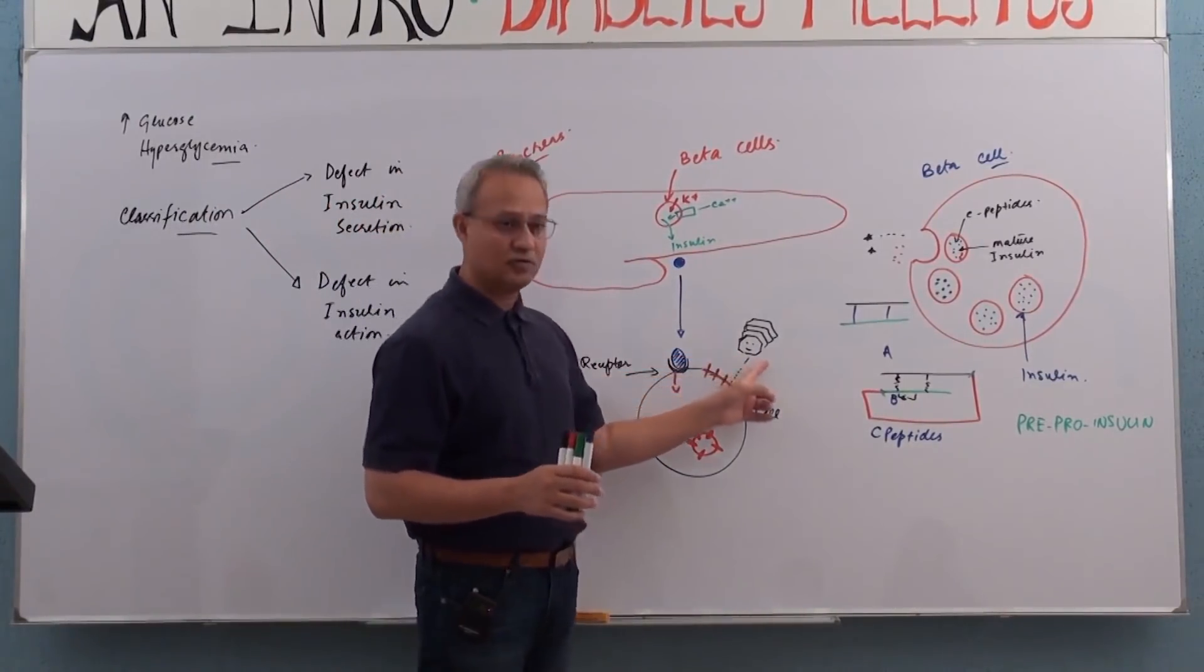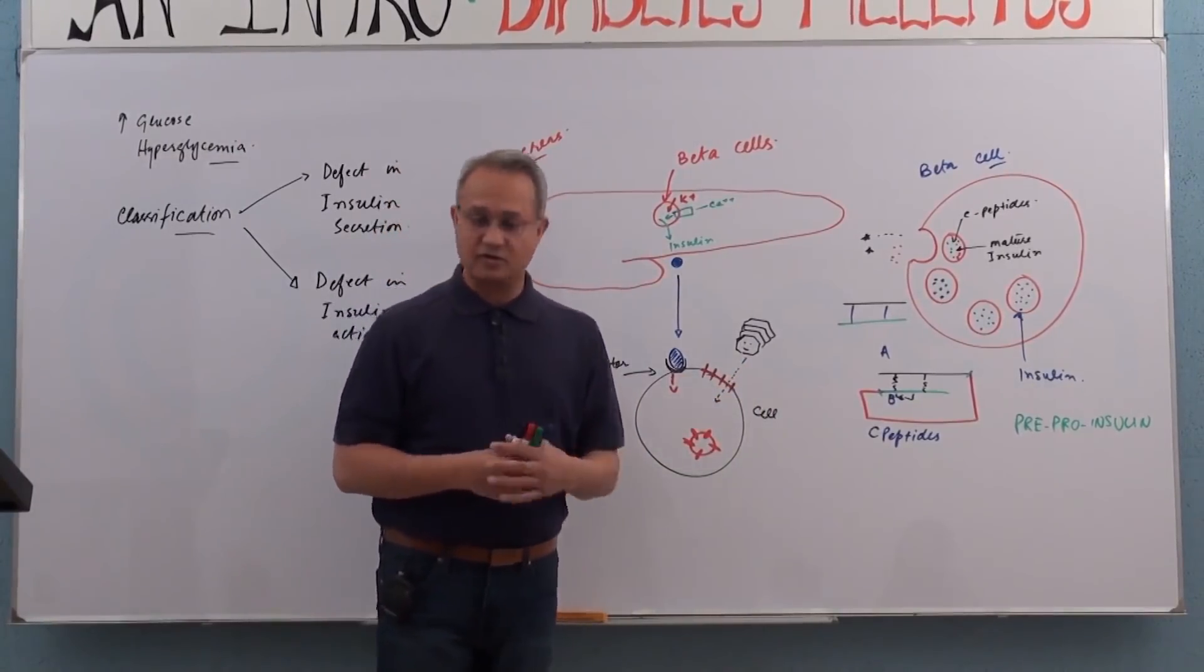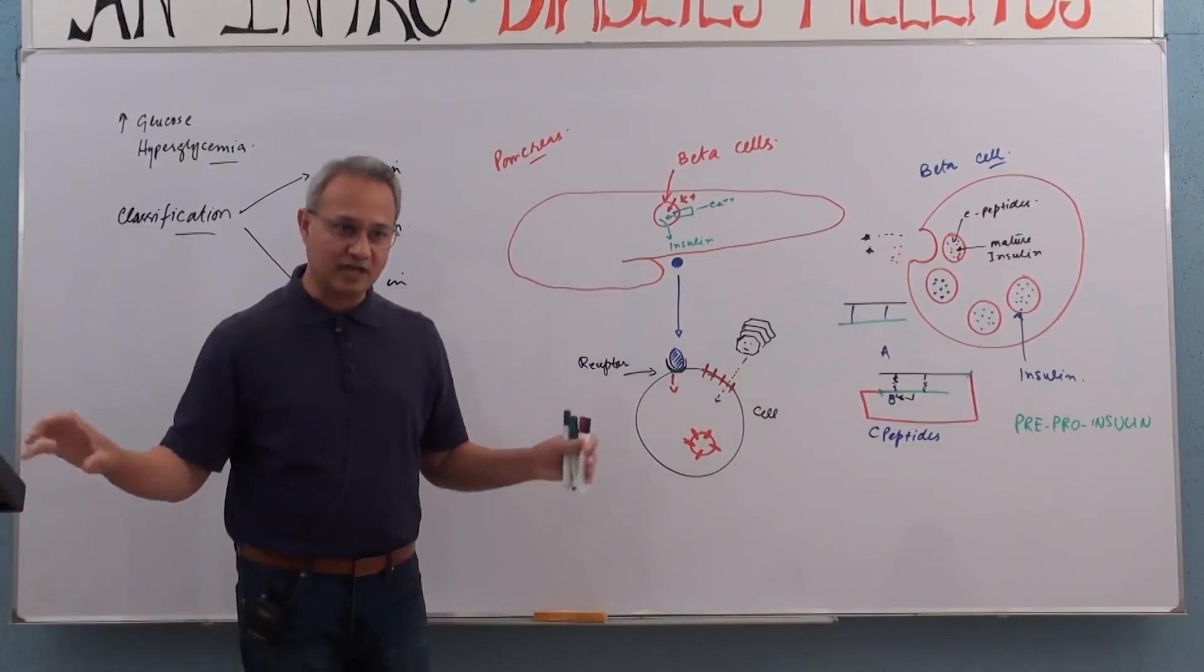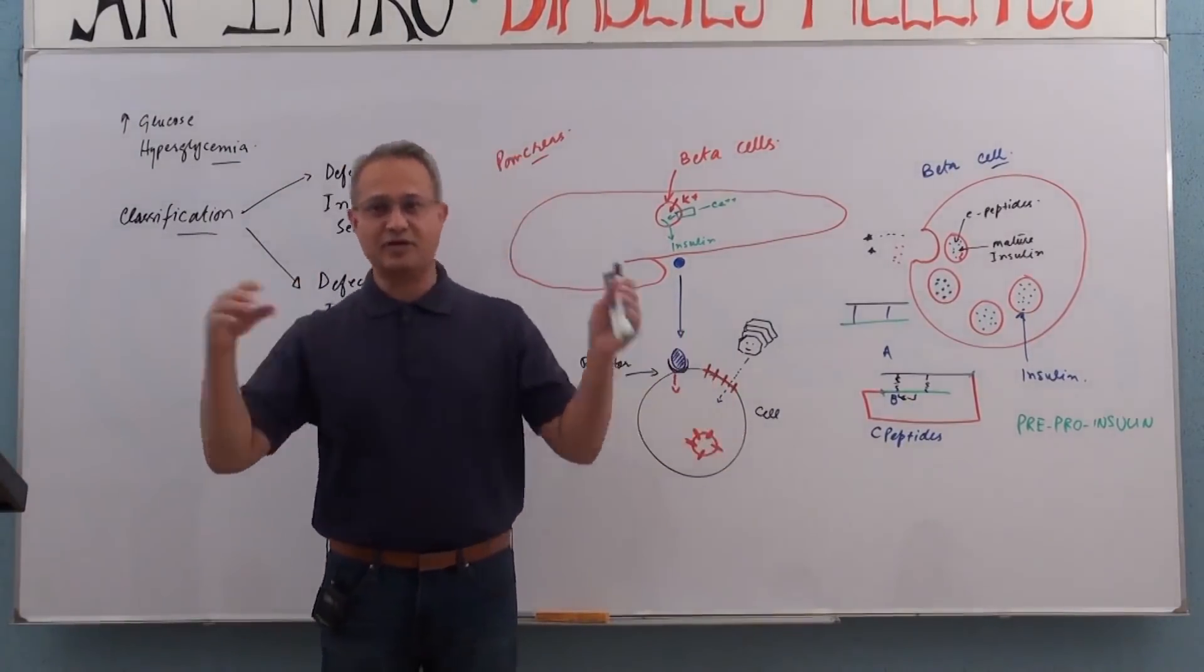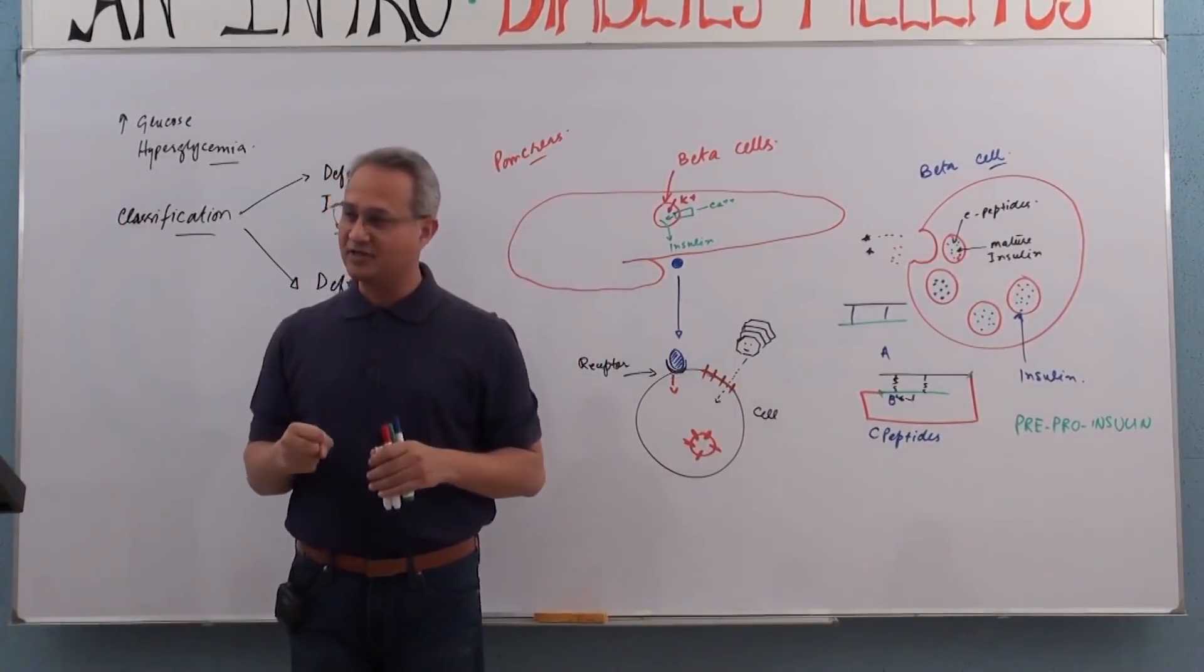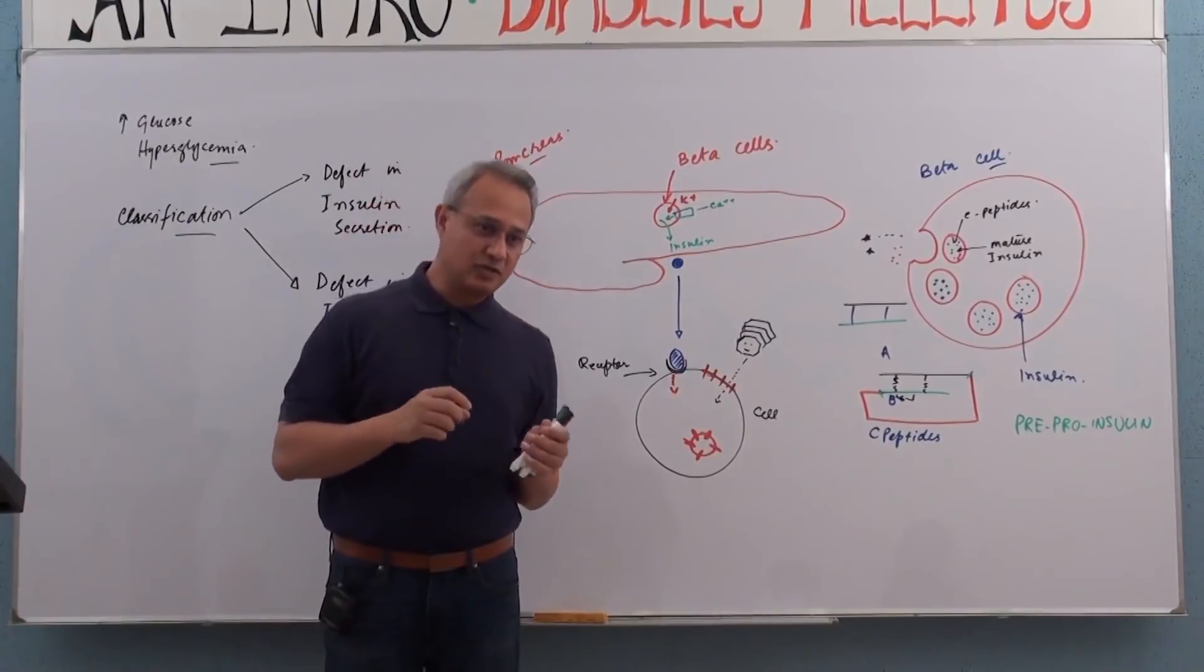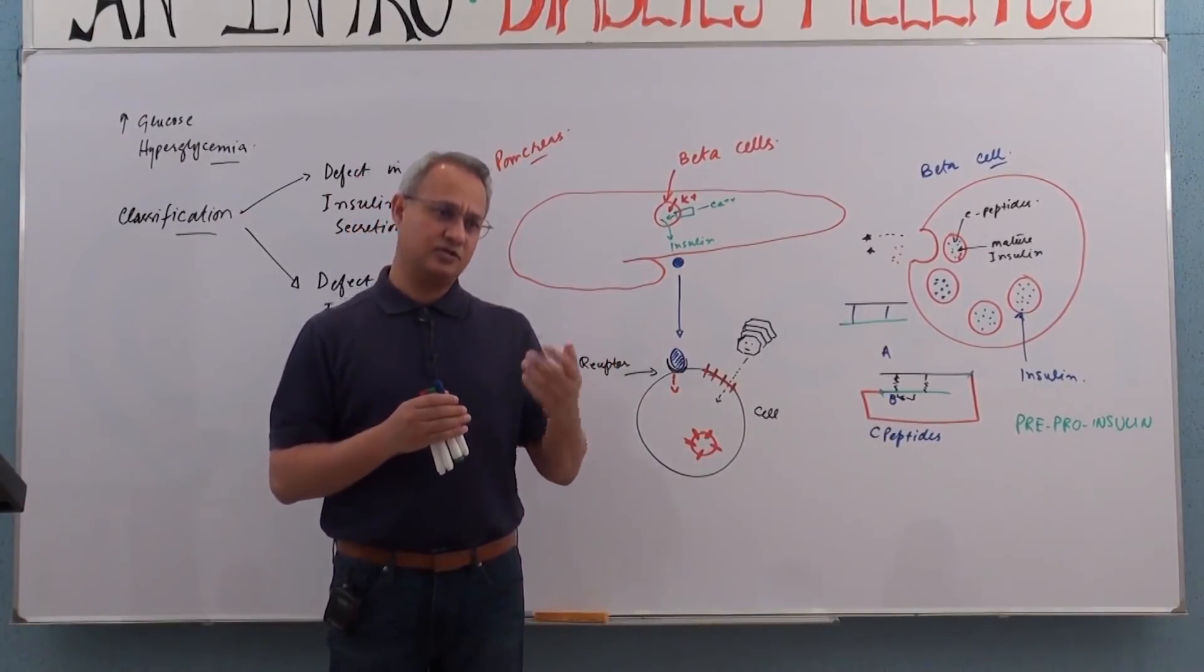Imagine you have a thousand glucose molecules where there should be just one. What is that molecule going to do? It's going to just grab hold of the things around it, right? So now imagine there is a small protein sitting there doing some function, and a glucose molecule comes and holds it. Would that protein do its function? That is the simplest way to understand it.